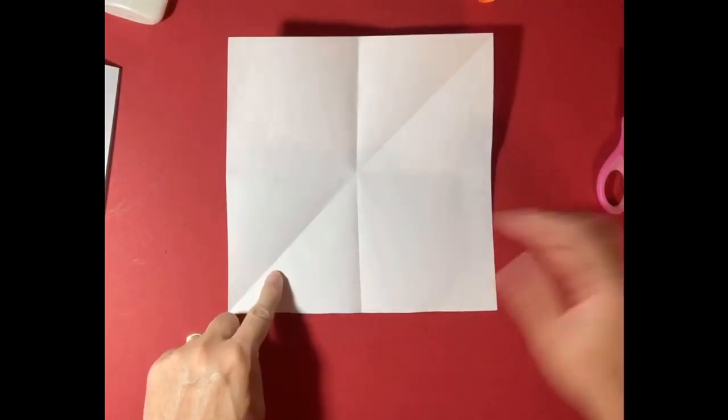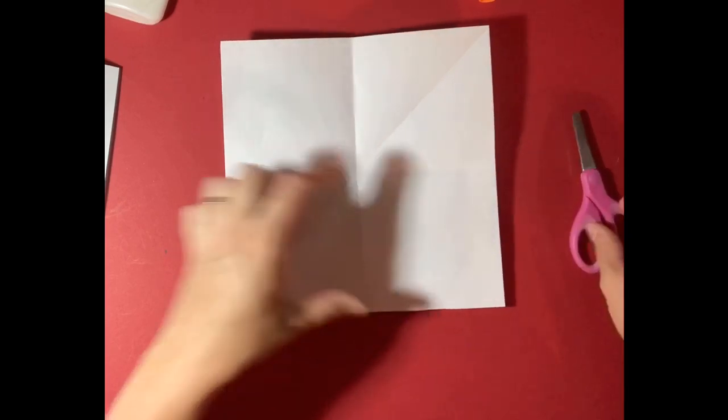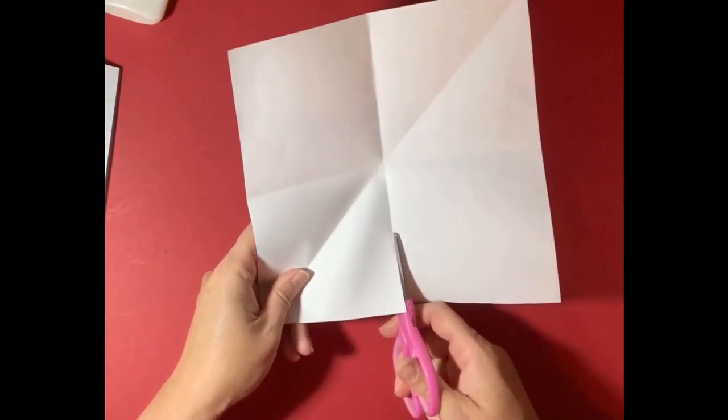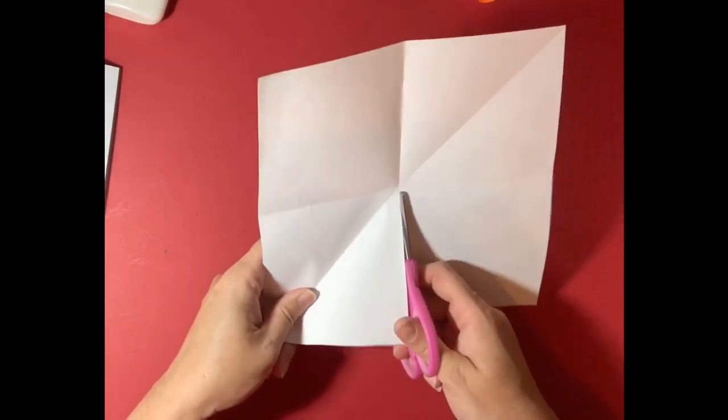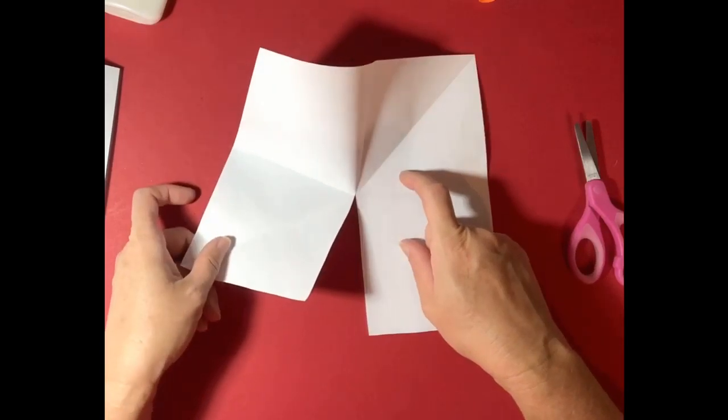Now when I open it up, I have a plus sign creases and a diagonal line. We're going to ignore the diagonal line and we're going to cut just this bottom half line that's vertical going straight up and down. And we're only going to cut right to the middle point. So we're only doing this bottom section here.